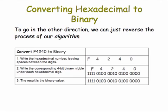So F4240 is another way to represent 1,000,000. The really nice part about hexadecimal and octal is that it's very easy to go in the other direction — from hex to binary. To do so, you just reverse the algorithm: write down the hexadecimal number, and under each of its digits write the 4-bit value for that digit. So F is 1111, 4 is 0100, and so forth. The resulting number is our original 1,000,000 in binary.